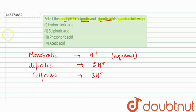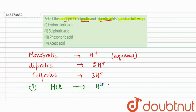First, we have hydrochloric acid, written as HCl. We can see that there is only one H, and it dissociates into H⁺ and Cl⁻ ions in aqueous solution. So HCl is our monoprotic acid.